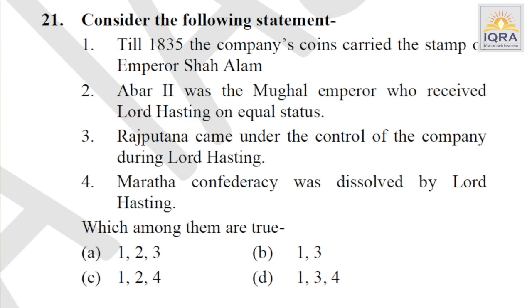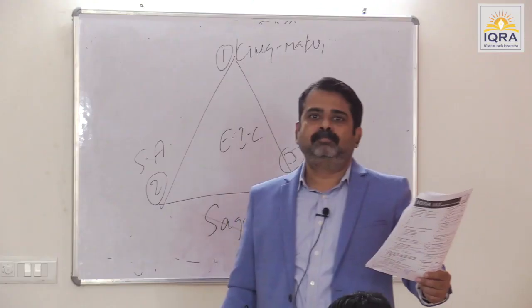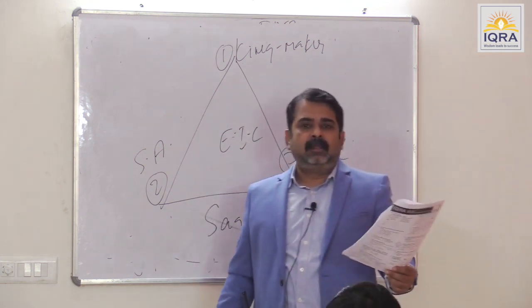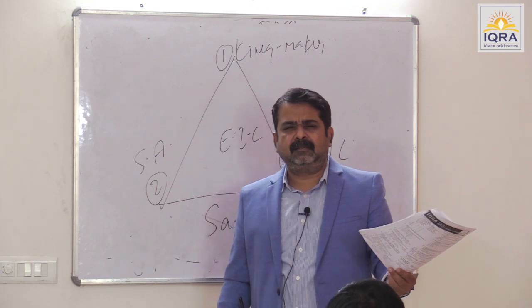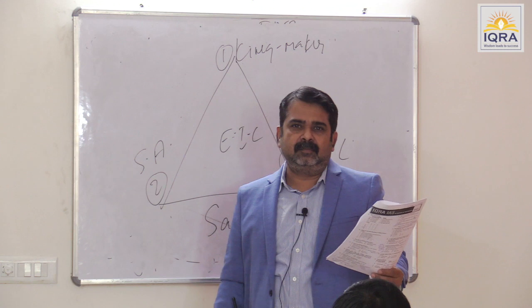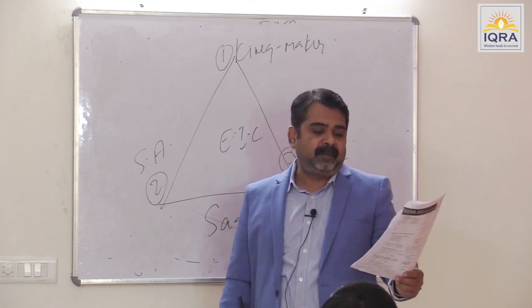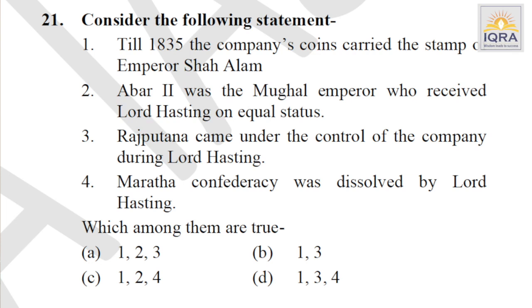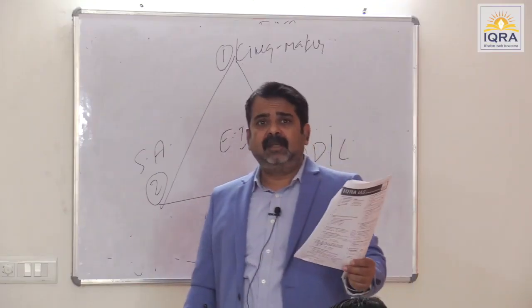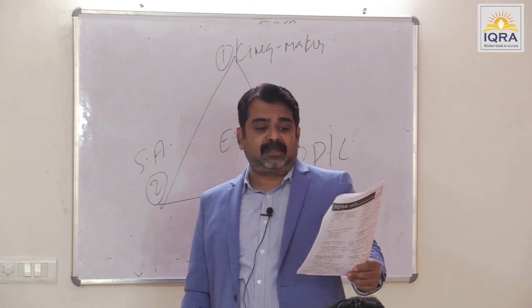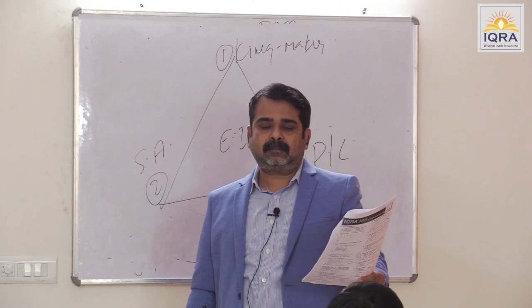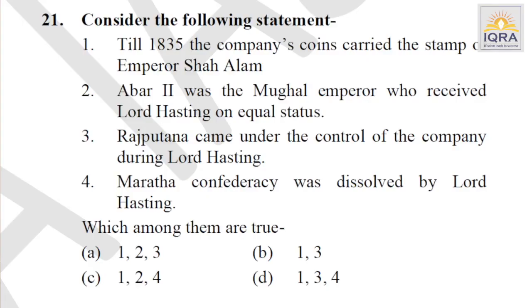Till 1835, the company's coins carried the stamp of Emperor Shah Alam — true. By the Charter Act of 1833, sole control moved into the hands of the Board of Control — currency was the medium to express who is the new power. Akbar II was the Mughal Emperor who received Lord Hastings on equal status — no, Lord Hastings wanted this but Akbar II met Lord Amherst in 1827. Rajputana came under the control of the company during Lord Hastings — true. Maratha Confederacy was dissolved by Lord Hastings in the Third Anglo-Maratha War. Answer is D.